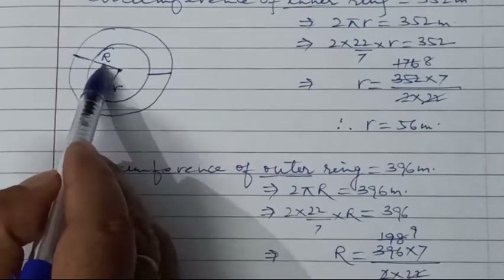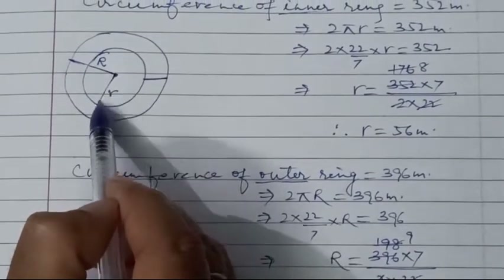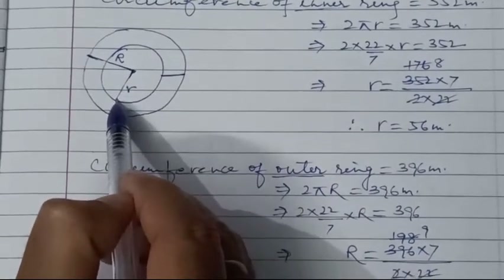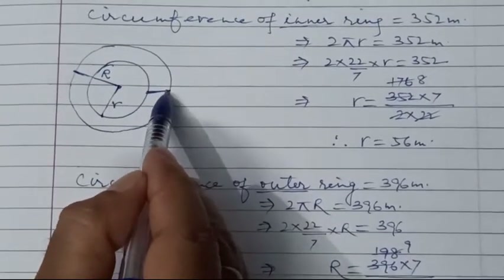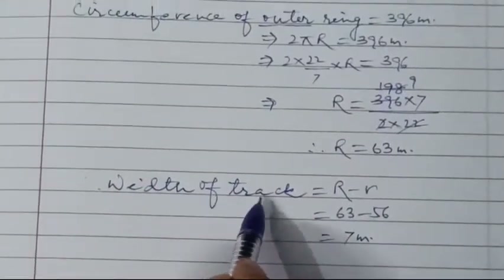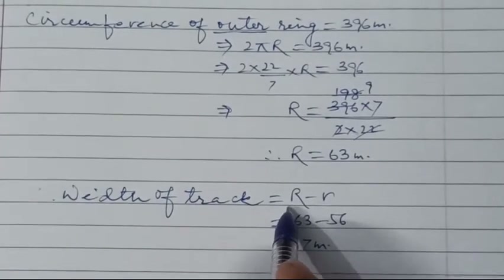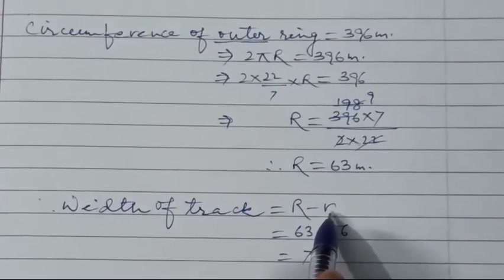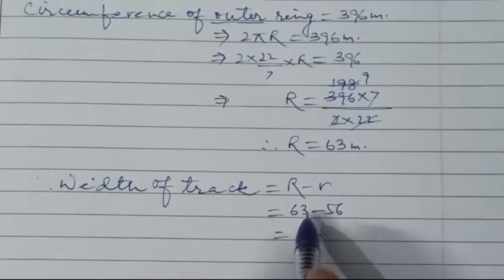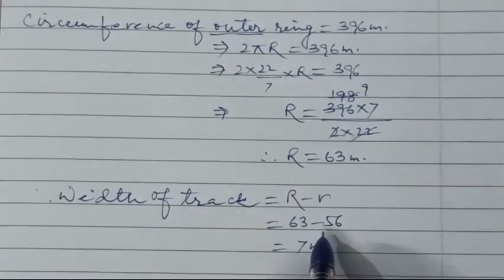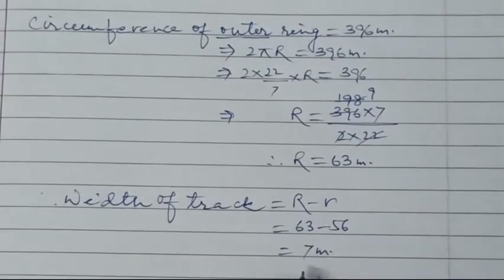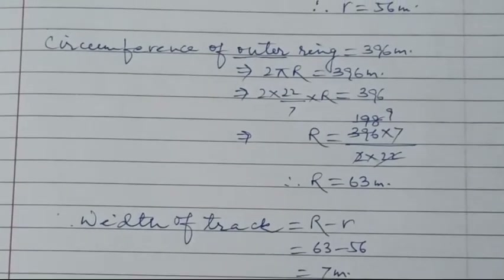Outer radius R is 63 meters and inner radius r is 56 meters. Subtracting inner from outer gives the width of the track. Width of track = R − r = 63 − 56 = 7 meters. Therefore, the width of the track is 7 meters. Thank you.